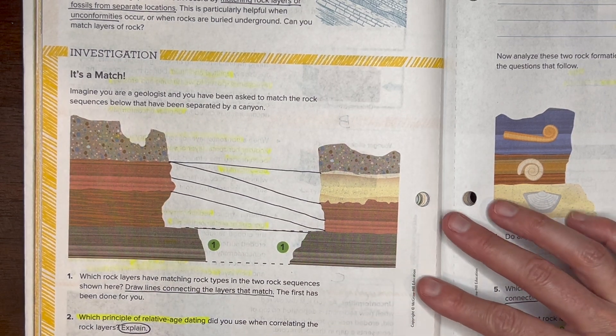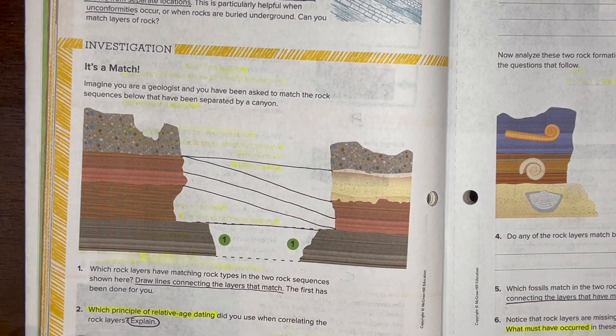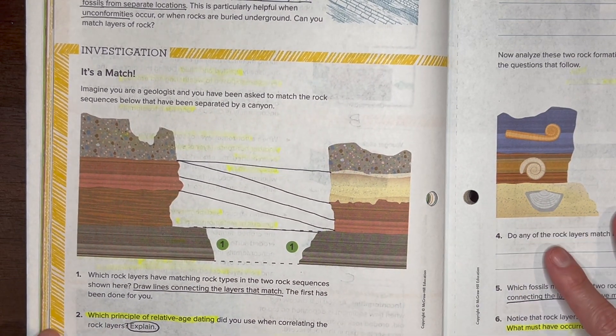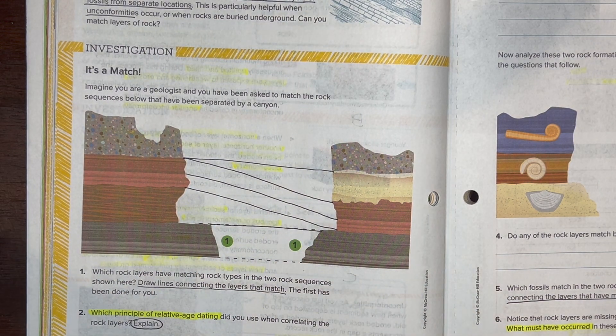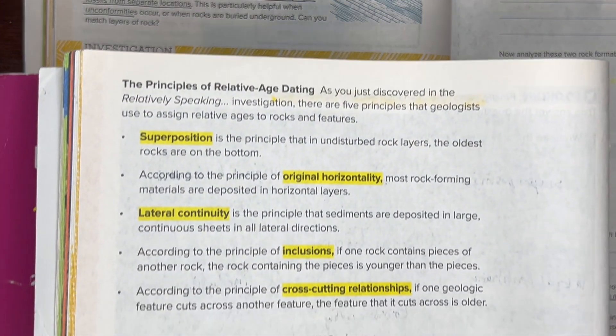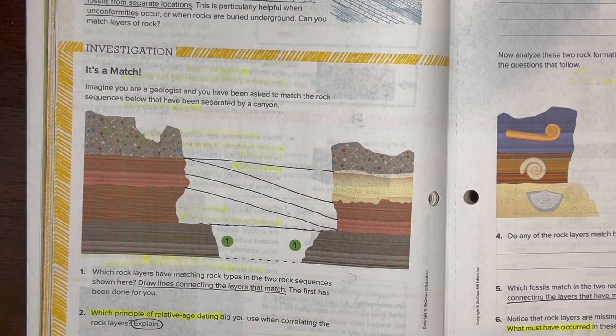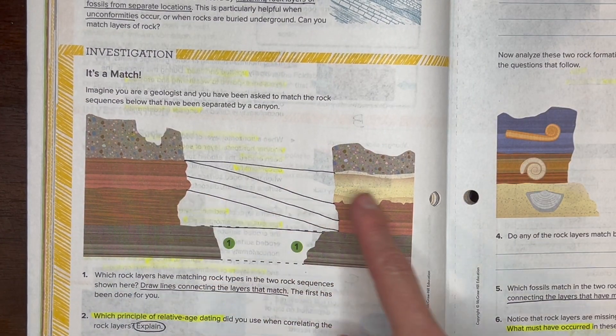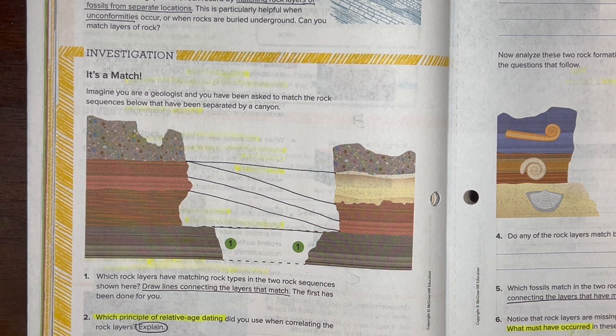Now what principle is this called when we're matching up rock layers that are separated by a canyon? Remember, look back on those principles of relative age back on page 18. Which one of these principles has to do with knowing that layers are connected across? Write that principle down here for number two and then explain.